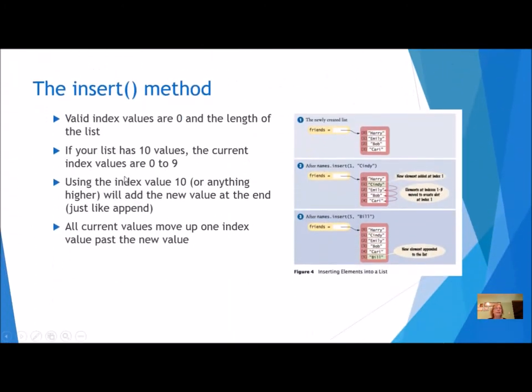Let's take a closer look at the insert method. So first of all, it's a method, so you're going to use dot notation and you have to give it the first argument is the index. So think about what are the valid index values for your list. Of course the first index is zero and it's going to go up to the length of the list. You might think, well wait a minute, the length of the list is one more than the index, and that's true. So if you put in an index, if your list has ten values, the current index values are zero to nine.